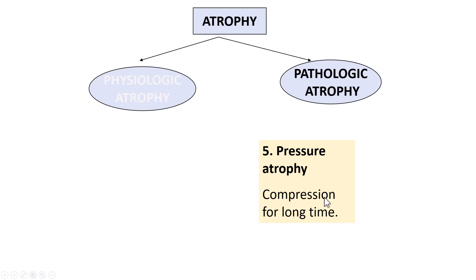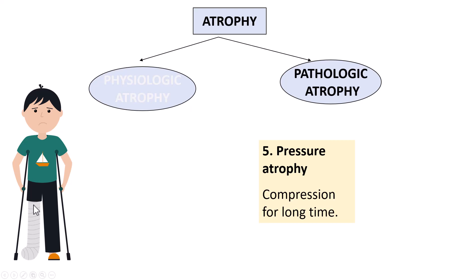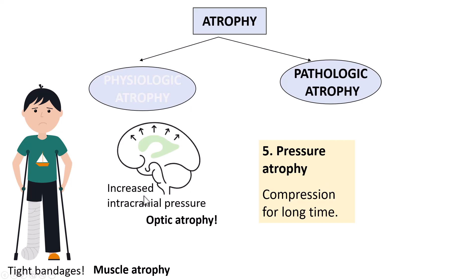The last one is pressure atrophy, which is because of compression of the tissues for a long period of time. For example, consider immobilization of a fractured limb — if the cast is very, very tight, that can also result in muscle atrophy because of tight compression. There is disuse atrophy, but because of tight bandage or compression of the muscular tissue, the atrophic process is hastened. Another example of pressure atrophy is whenever there is increased intracranial pressure, it leads to optic atrophy. Pressure atrophy can occur anywhere in the body when there is pressure from a growing tumor or from tight external compression.